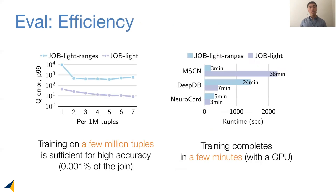On the left-hand side, we see that training on a few million tuples is already sufficient to achieve high accuracy. On the right-hand side, we see that on a GPU, training can be completed quite efficiently in a few minutes.